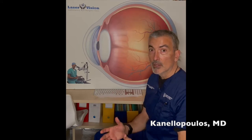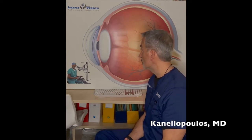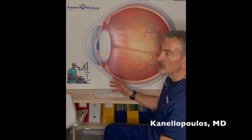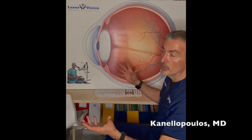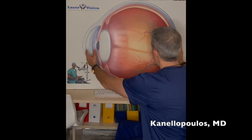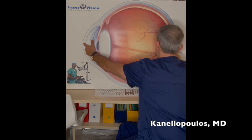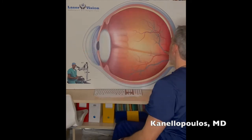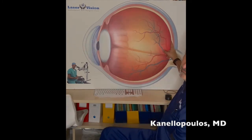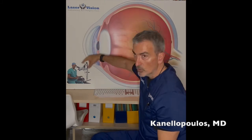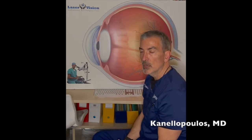I'm going to talk a little bit about IOL calculation. We all know that it's based on two principles: the actual length between the apex of the cornea and the macula, and the curvature of the cornea. This is how most IOL calculation formulas work.